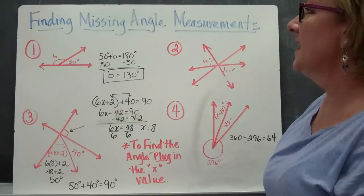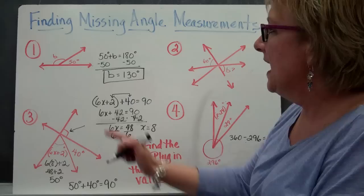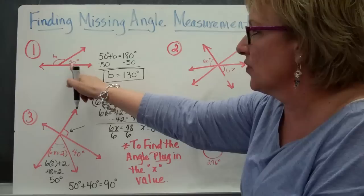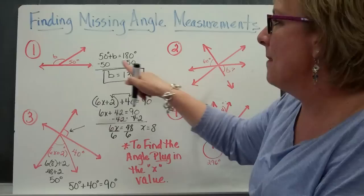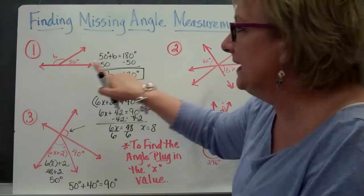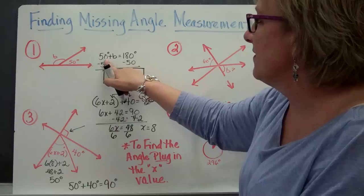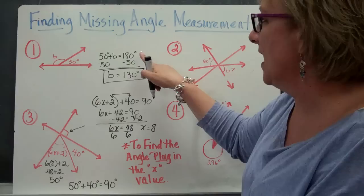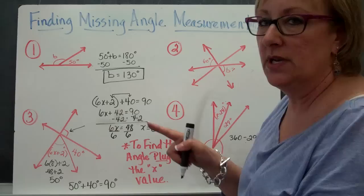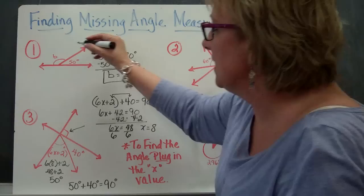Let's look at finding some angle measurements when one is missing. If I know that I have an angle here and I have a 50-degree acute angle on this side and I want to find out what B is, I know that these two angles together make a supplementary angle or a 180-degree angle — it is also called a linear pair because the two angles together make 180 degrees. So I'm going to say 50 plus whatever B is will equal 180. When I subtract 50 from both sides, I know that angle B is going to equal 130 degrees.